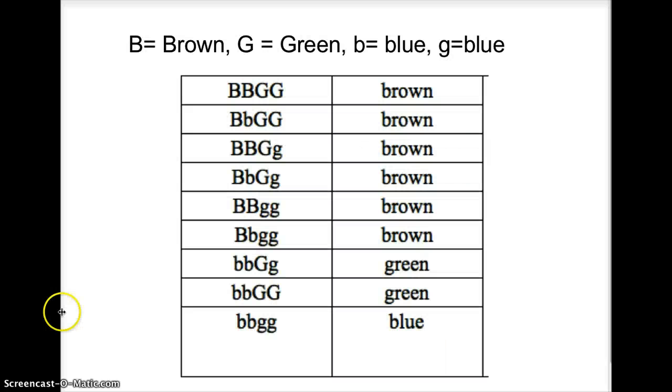So now what we're going to explore is our Punnett squares with eye colors and our genotypes, because it's a little bit different. So here's what you need to know. In our world that we're talking about right now, there's three eye colors: brown, green, and blue.